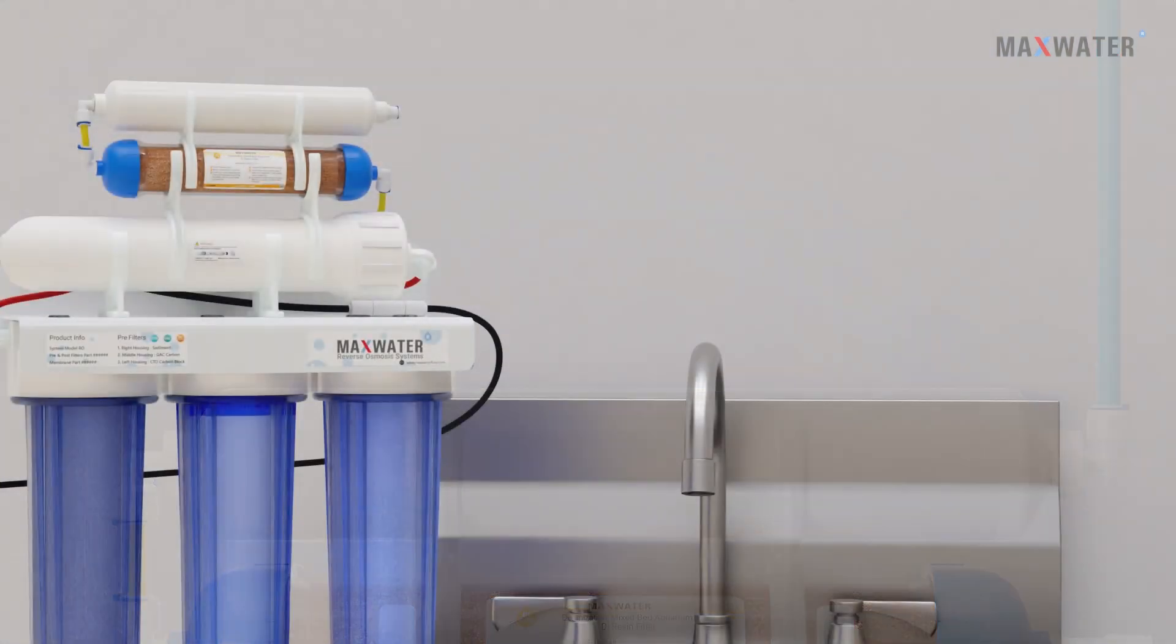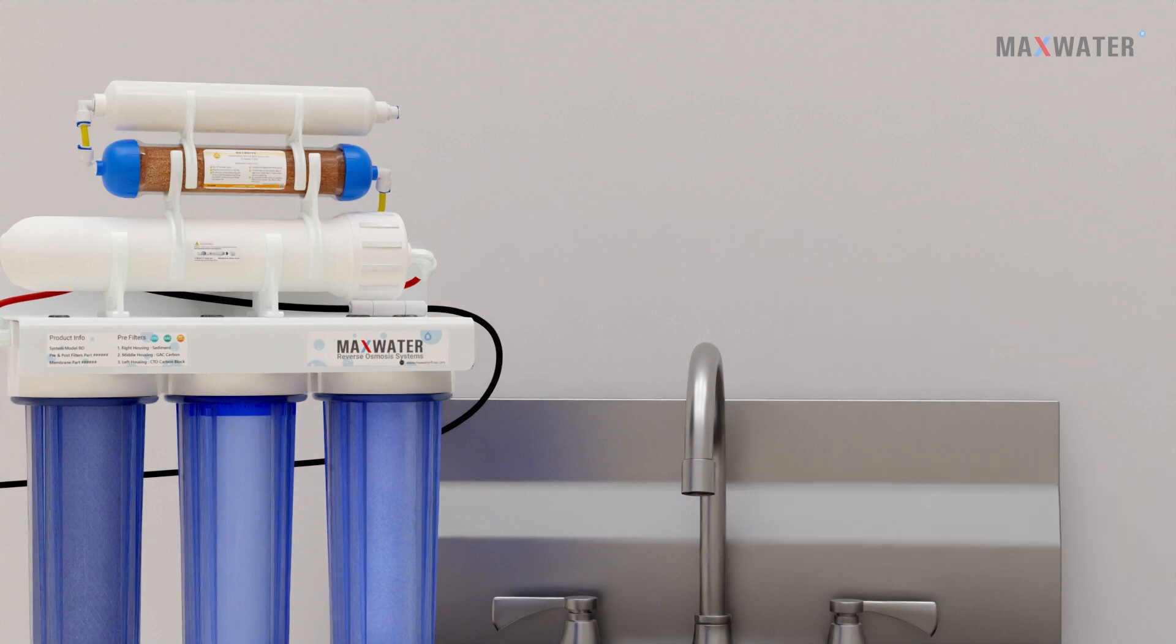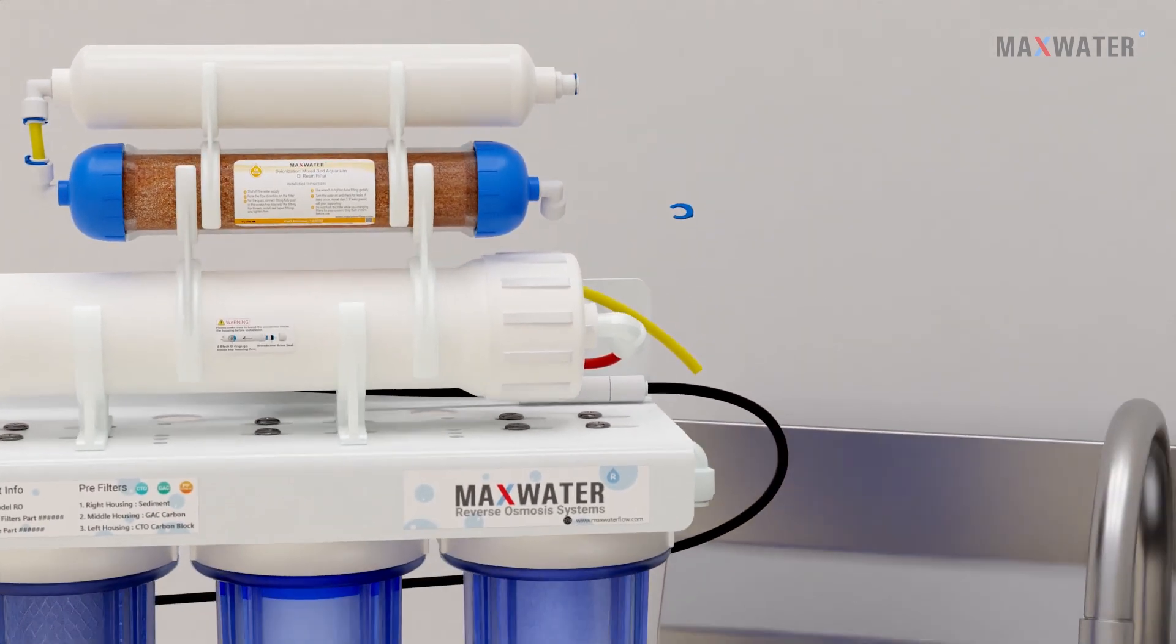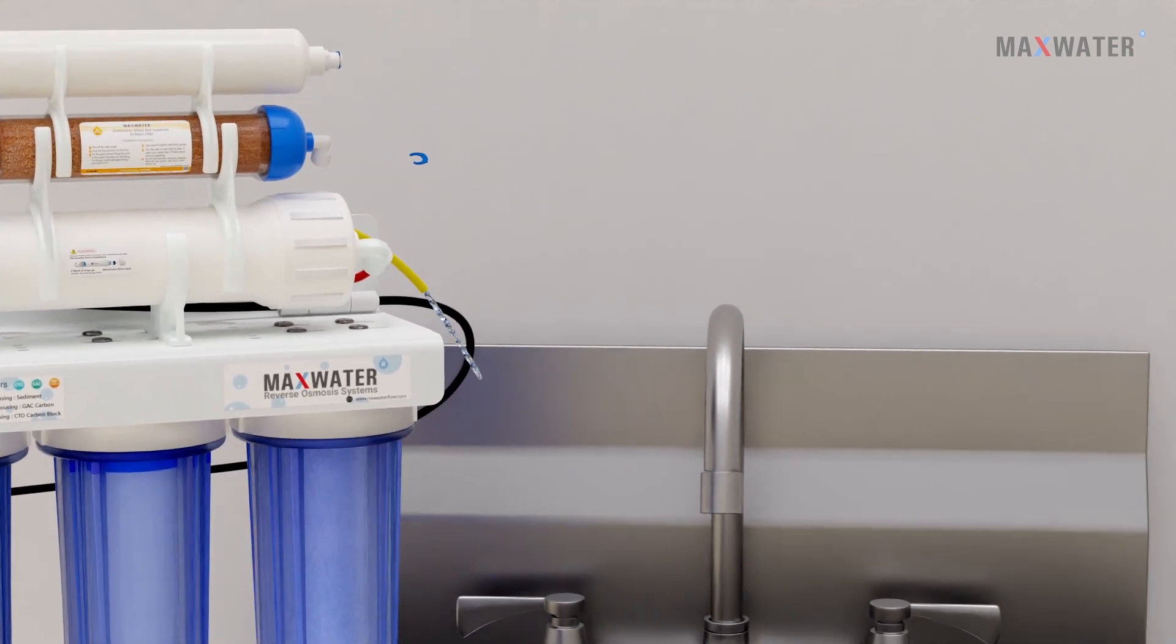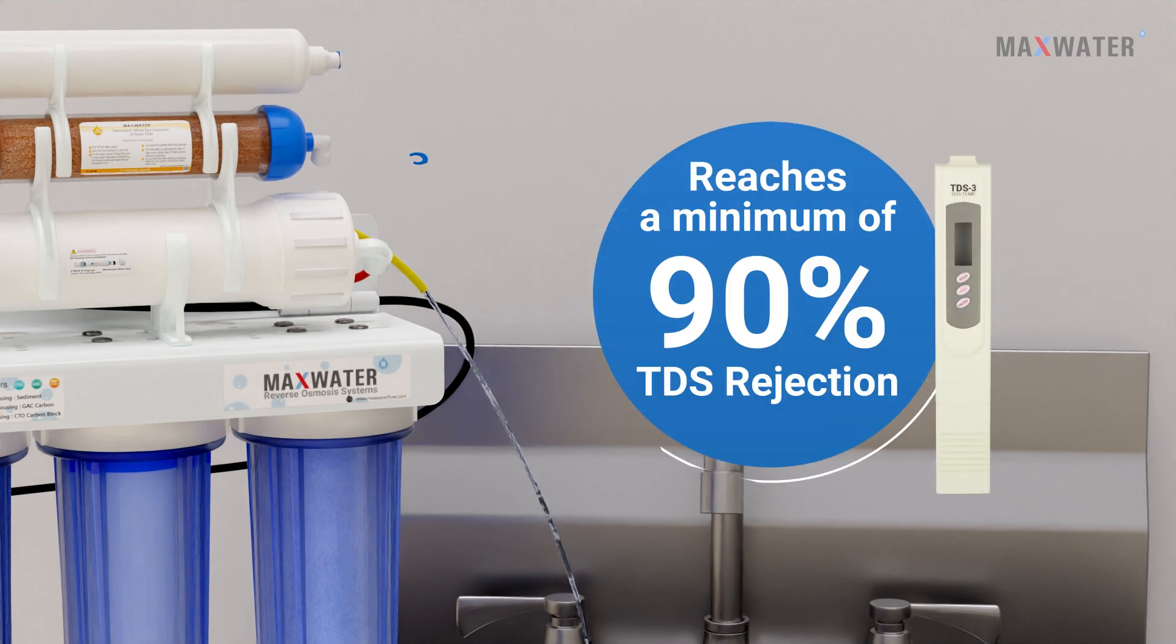Flushing step number two: RO membrane flushing. While the main water supply is off, disconnect the yellow tube from the inlet fitting of the DI filter. Place it over the sink or container to catch the water. Turn on the water supply and keep it running for at least five to ten minutes. If you have a TDS meter, keep it running until it reaches a minimum of 90% TDS rejection.